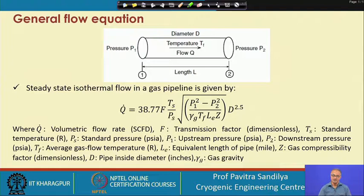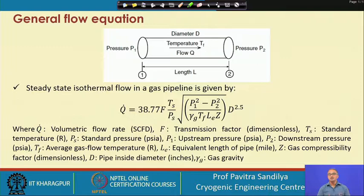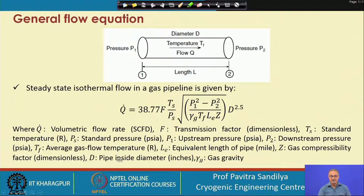There is a constant in the equation whose value changes depending on the unit system used — SI units or FPS (foot-pound-second, British units). The equation as presented uses FPS units where flow rate is in standard cubic feet per day, pressure is in PSIA (pounds per square inch absolute), temperature is in Rankine, pipeline length is in miles, and diameter is in inches. When using this equation, care must be taken to use these specific units to obtain the correct flow rate.